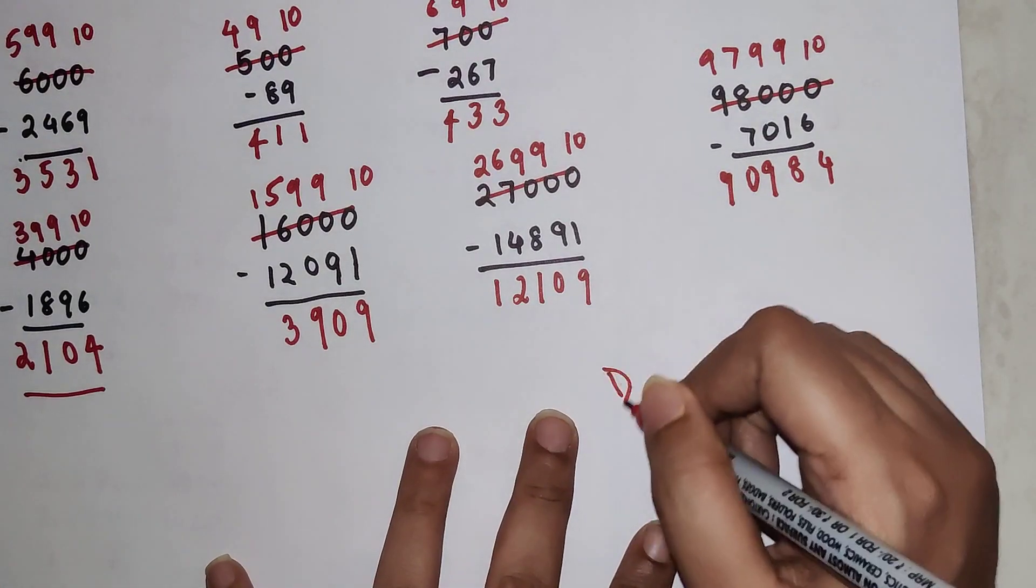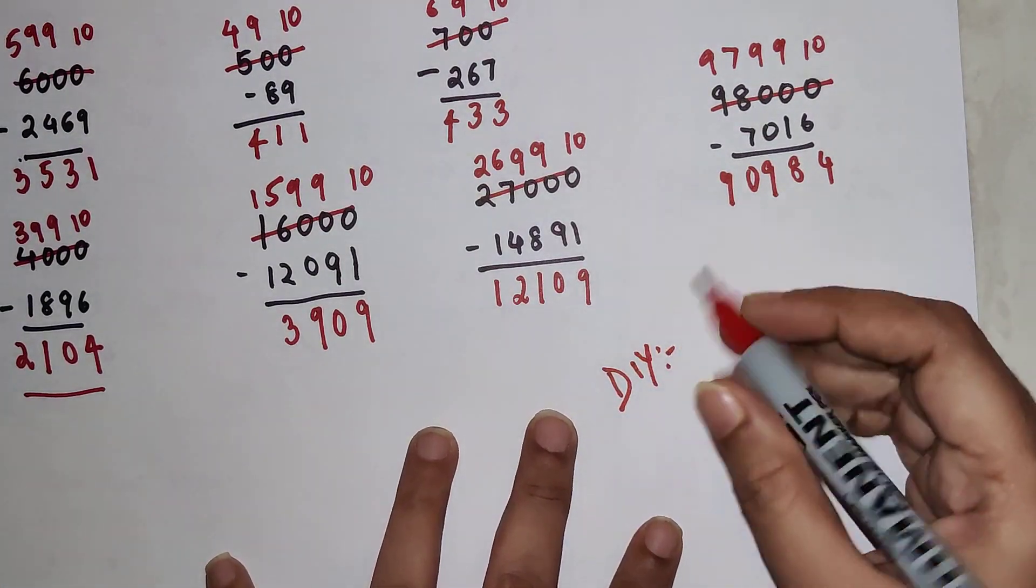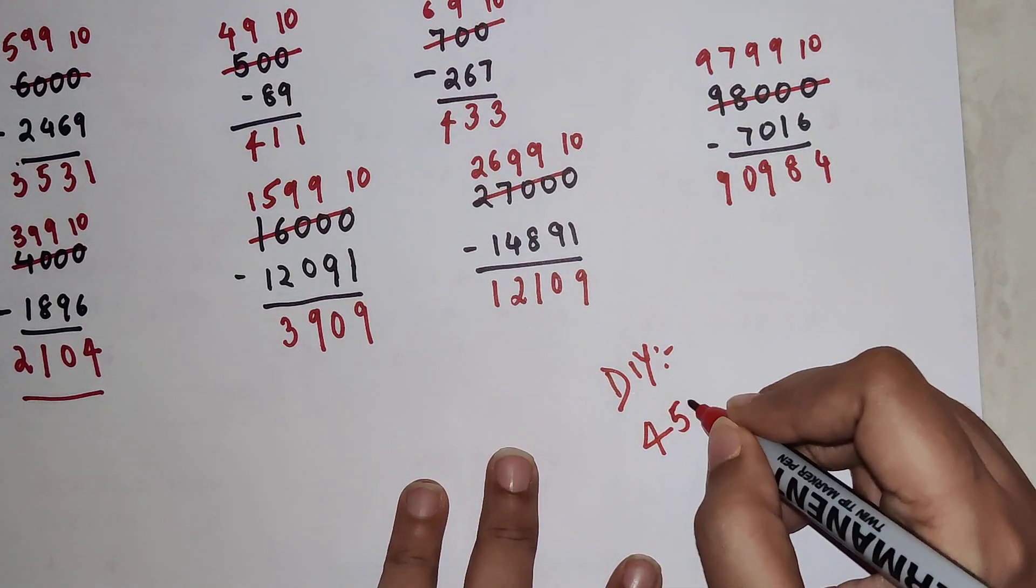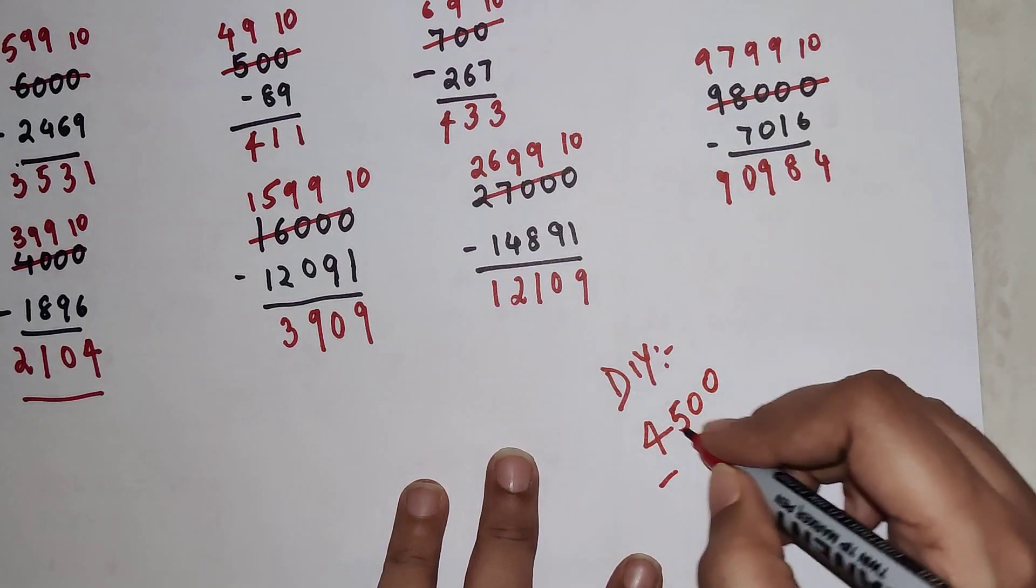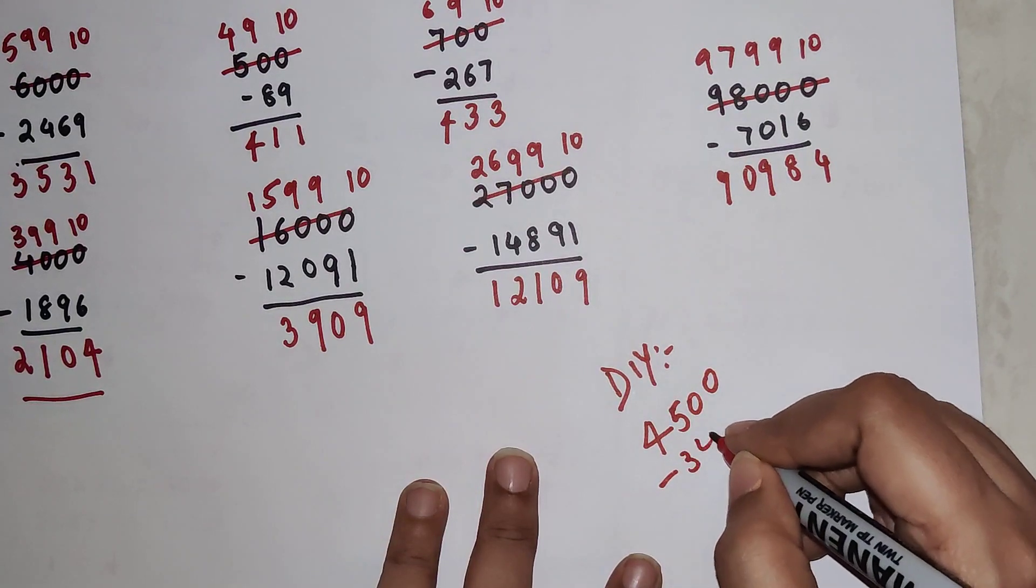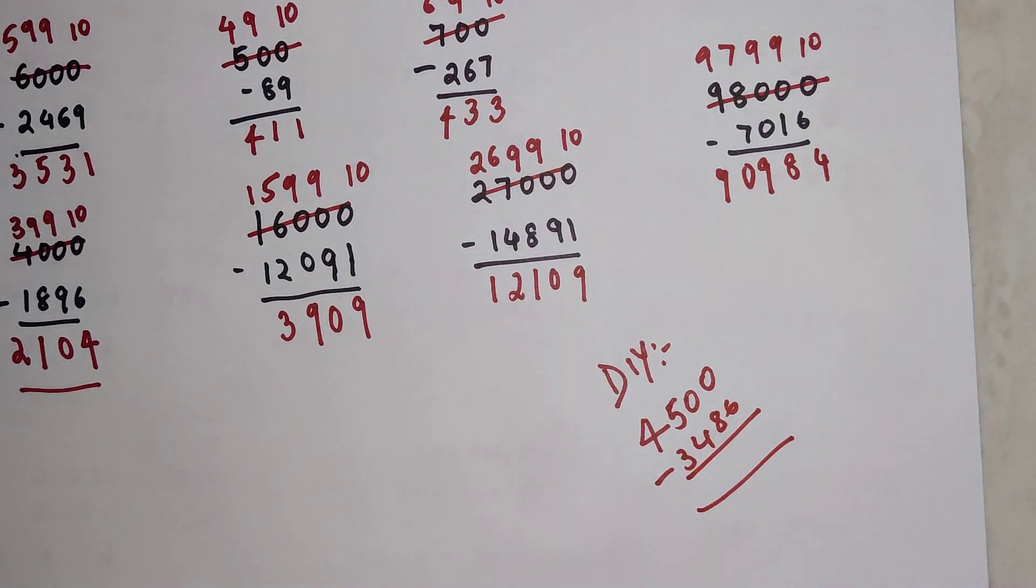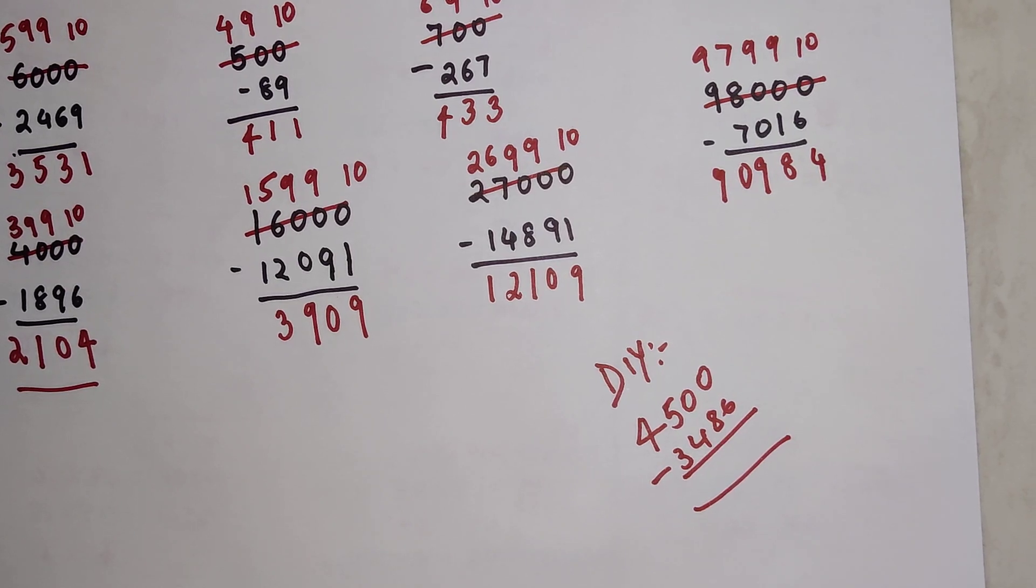So now time for your DIY. You let me know what is the answer when you subtract 3486 from 4500. What is your answer? Do let me know your answers in the comment section. So that's it for today. I will see you in the next video. Thank you.